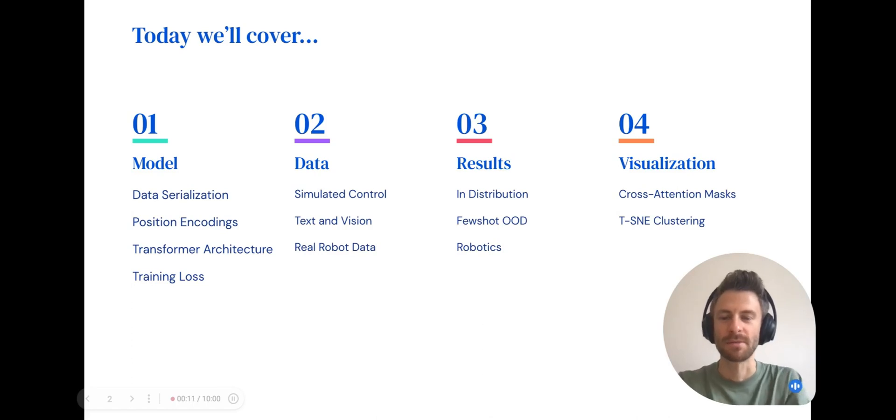We'll begin by talking about the model, how we convert data into embeddings, the architecture used, and how we calculate the training loss. Next, we'll discuss the different data sources we used for training and fine-tuning models. Jackie will discuss our in-distribution, few shot out of distribution and robotics results, and finally, Jackie will show our work on visualizing and interpreting attention masks.